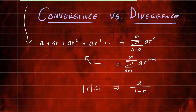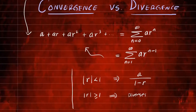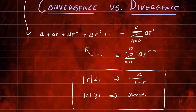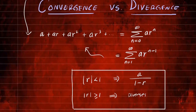But if r in absolute value is greater than or equal to 1, then the series will diverge. So if r is between negative 1 and 1, not including negative 1 or 1, it converges to a over 1 minus r. If the absolute value of r is greater than or equal to 1, it diverges. Let's look at some problems to determine convergence or divergence.